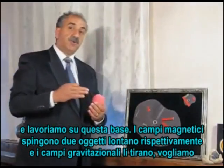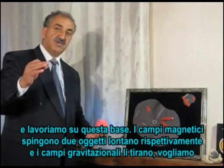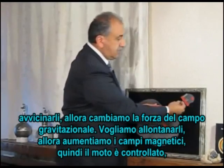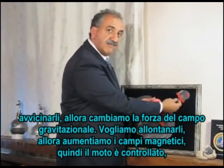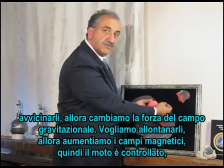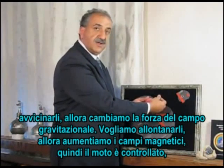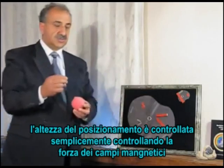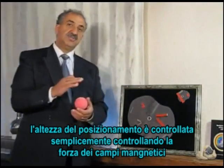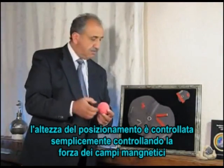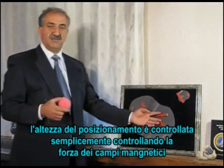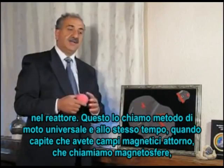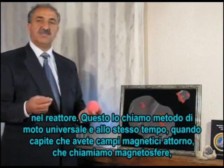Magnetic fields push two objects away from each other. Gravitational fields pull. We want to get closer — we change the strength of the gravitational field. We want to get further — we increase the magnetic field. So the motion is controlled. The height and positioning are controlled by simply controlling the strength of the magnetic fields within the reactor. And that's what I call the universal method of motion.